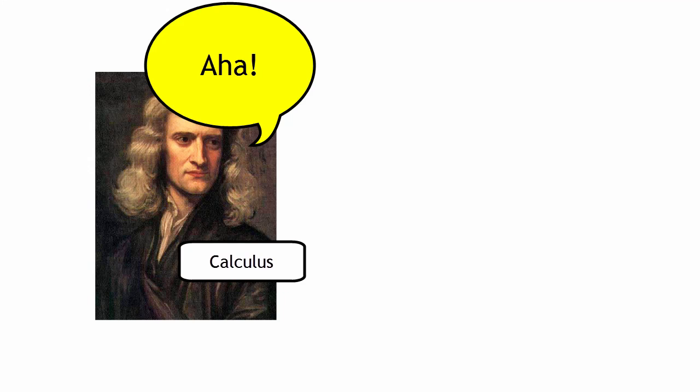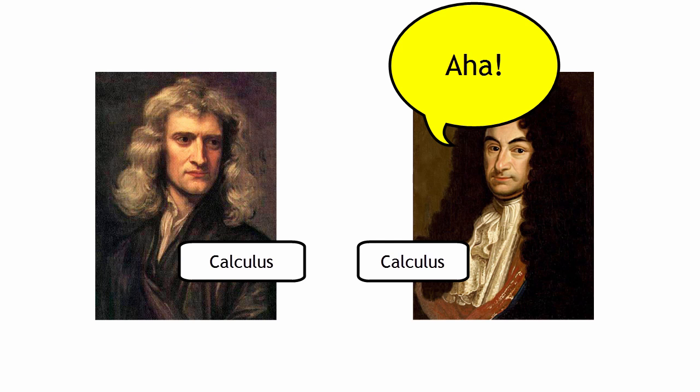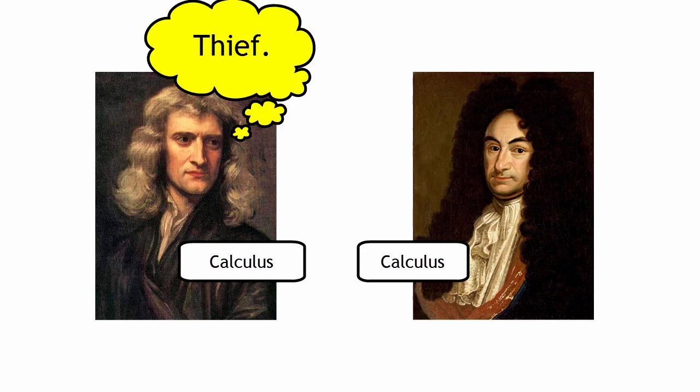Calculus was invented back in the 17th century and its invention is a bit confusing. Sir Isaac Newton came up with the idea for calculus, but at the same time Leibniz also came up with the idea of calculus independently. Newton then accused Leibniz of stealing his work, and for a while people split into two sides depending on whether they believed Newton or Leibniz came up with calculus. Nowadays we credit both as co-inventors.